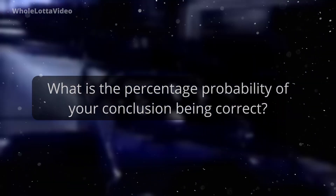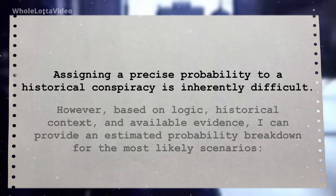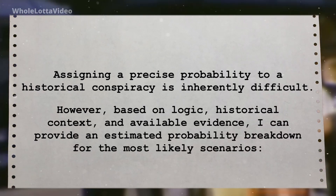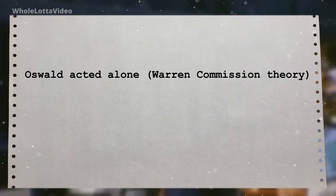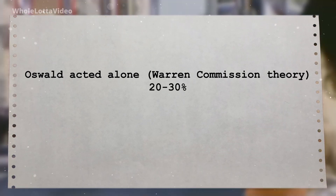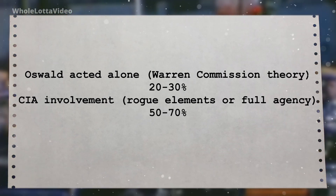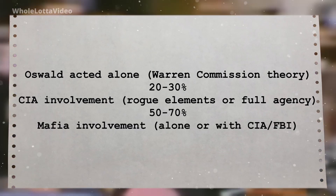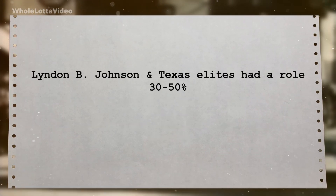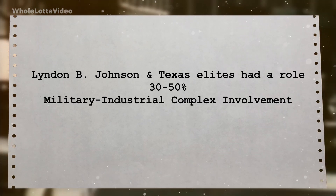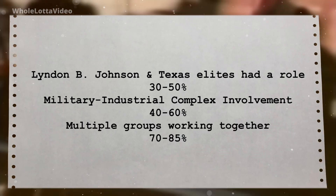Computer, what is the percentage probability of your conclusion being correct? Assigning a precise probability to a historical conspiracy is inherently difficult. However, based on logic, historical context, and available evidence, here is an estimated probability breakdown: Oswald acted alone (Warren Commission theory): 20–30%. CIA involvement (rogue elements or full agency operation): 50–70%. Mafia involvement (alone or CIA-FBI): 40–60%. Johnson and Texas elites had a role: 30–50%. Military-industrial complex: 40–60%. Multiple groups working together: 70–85%.